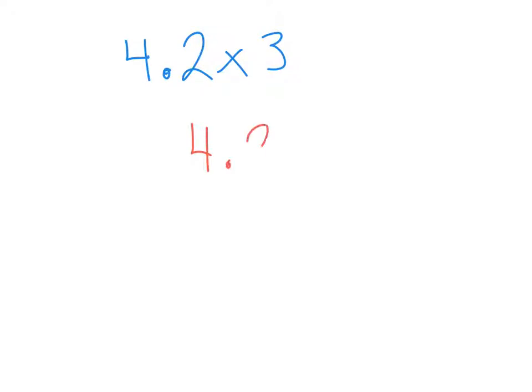4 and 2 tenths times 3. Notice how I keep my numbers aligned with each other, and I do not have them lined up by place value. My 3 is in the 1's place, my 4 is in the 1's place, but they're not in the same place value when lined up in the standard algorithm because I need to have my 3 furthest to the right so I can multiply the numbers on top without getting confused.